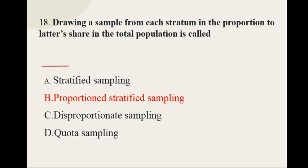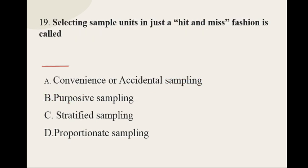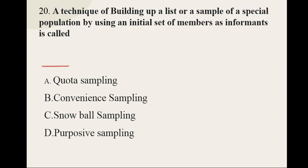Question number nineteen: Selecting sample units in a hit-and-miss fashion is called — options are: convenience or accidental sampling, purposive sampling, stratified sampling, proportionate sampling. The correct option for question number nineteen is convenience or accidental sampling.